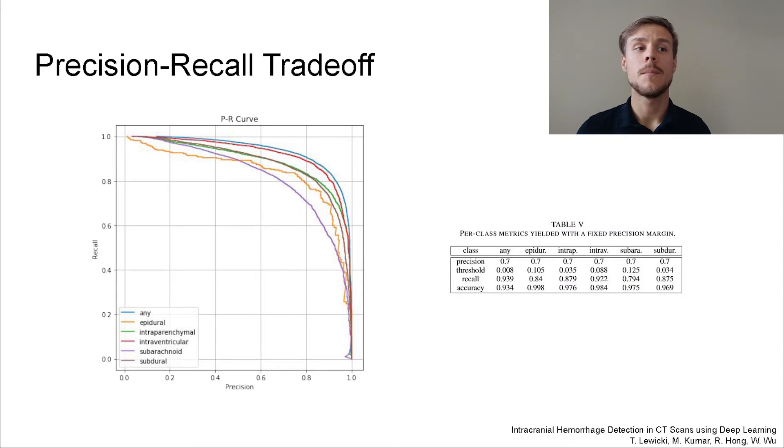For example, by allowing a lower precision of 70%, we can achieve an average recall score of 86%, which is 10 percentage points higher than our initial result.